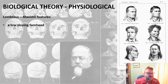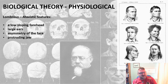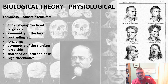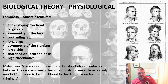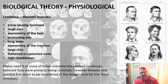The atavistic features include: a low sloping forehead, large ears, asymmetry of the face, a protruding jawline, long arms, asymmetry of the cranium, a large chin, a flattened or upturned nose, and high cheekbones. Lombroso concluded that males needed five or more of these features to be prone to criminality, whereas females only needed three to be considered in the danger zone for the born criminal — a detail many candidates miss in the exam.